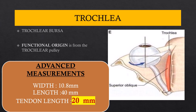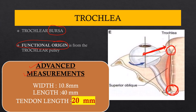The trochlea is a very important structure. As the muscle passes through it, friction from constant wear and tear is prevented by the trochlea's structure. Importantly, although the muscle originates from the posterior orbit, its functional origin is at the trochlea — meaning the direction of pull is always toward the trochlea, along the post-trochlear part. The width is about 10 mm, the muscle length is about 40 mm, and the tendon length is about 20 mm, making the total length about 60 millimeters.